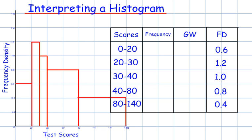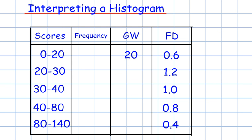Now that we've completed that part of the table we need to fill in the group width. From 0 to 20 has a group width of 20, from 20 to 30 has a group width of 10, from 30 to 40 has a group width of 10, from 40 to 80 has a group width of 40, and from 80 to 140 has a group width of 60.